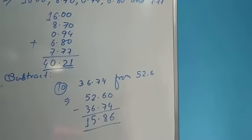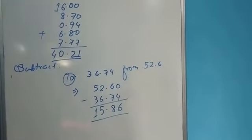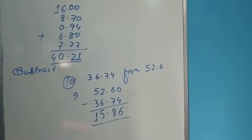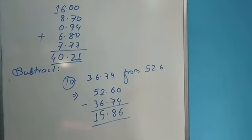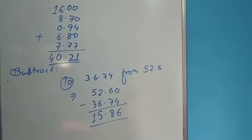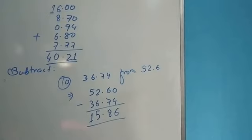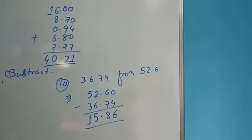For subtractions we can follow this same process. For example, we can subtract 36.74 from 52.6. Students, 52.6 has 1 decimal place and 36.74 has 2 decimal places. So first we write 52.6 with 2 decimal places.